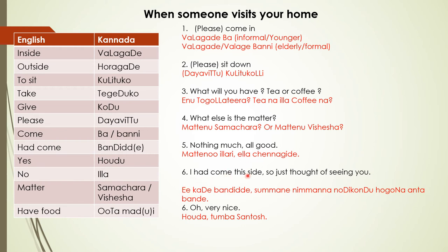I had come this side — so just thought of seeing you. This is what the person would say if they dropped in without intimation. Ee kade bandidde. Summane nimmanna nodi kondu hogona antha bandde — I had come this side, just came thinking of seeing you. The response: Hauda tumba santosha — oh, very nice.